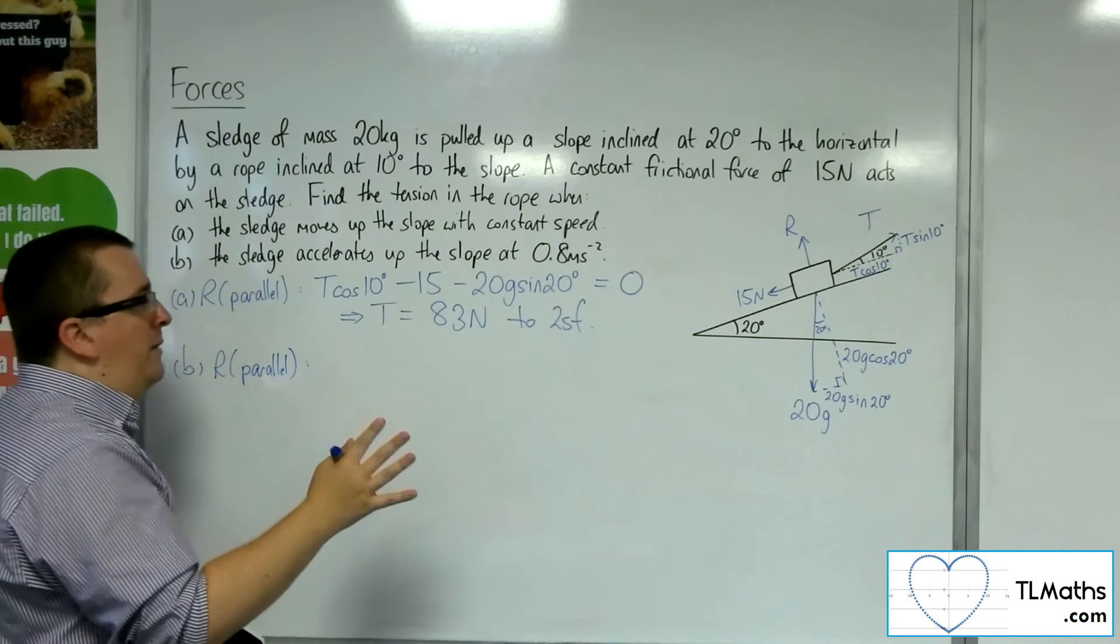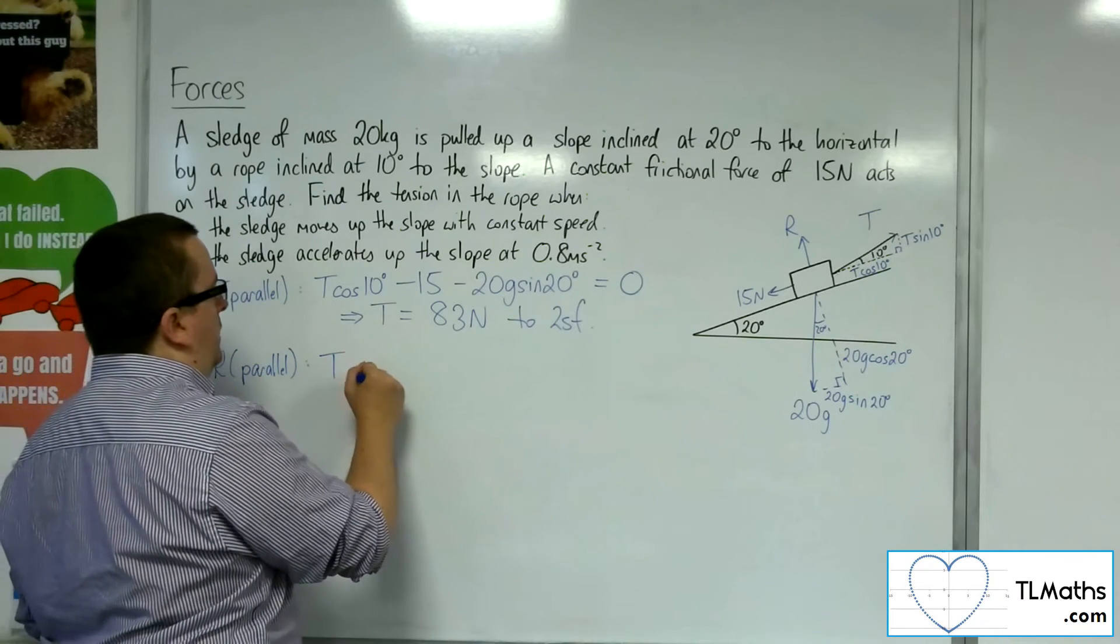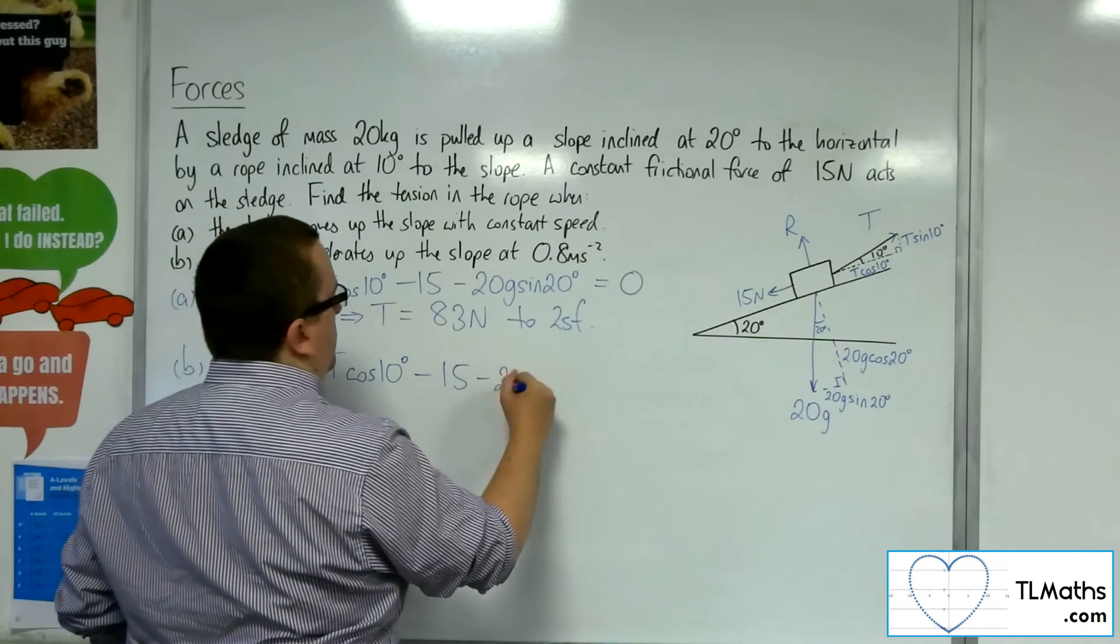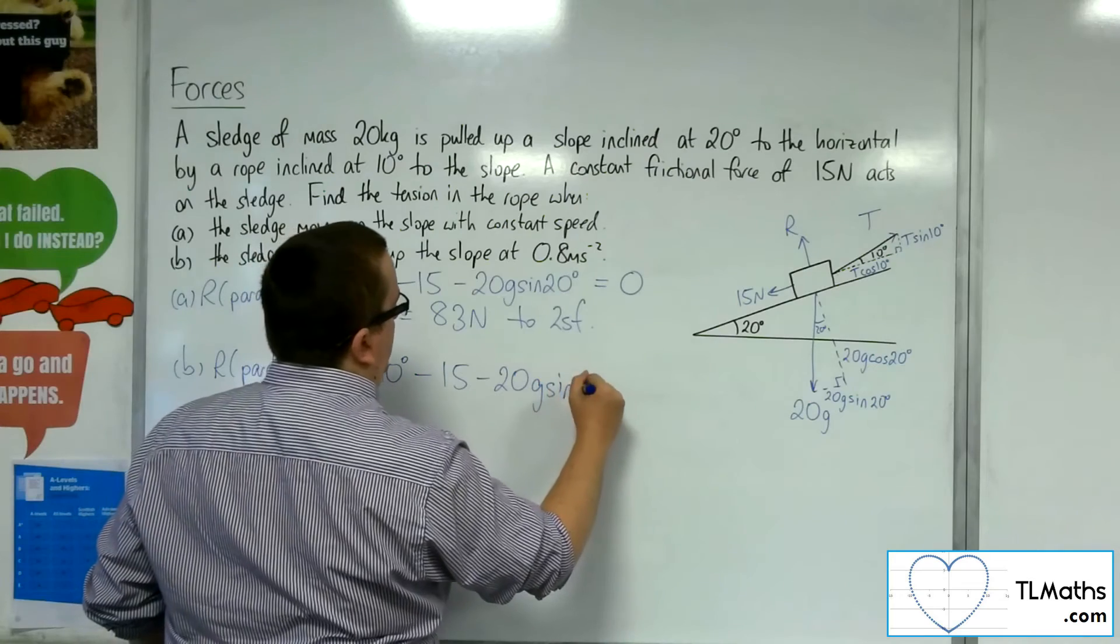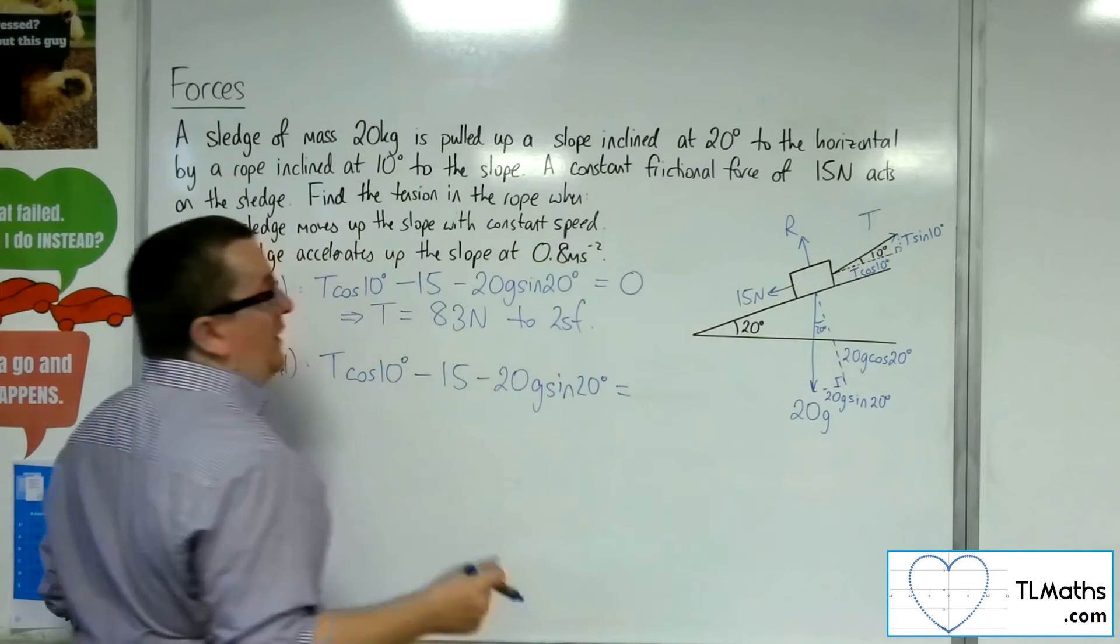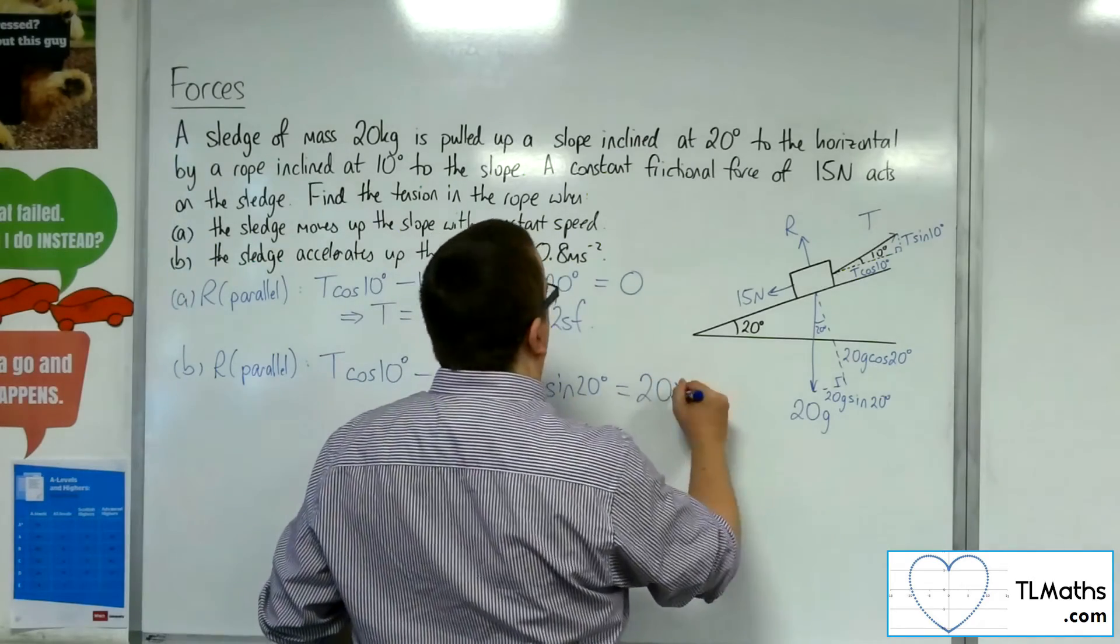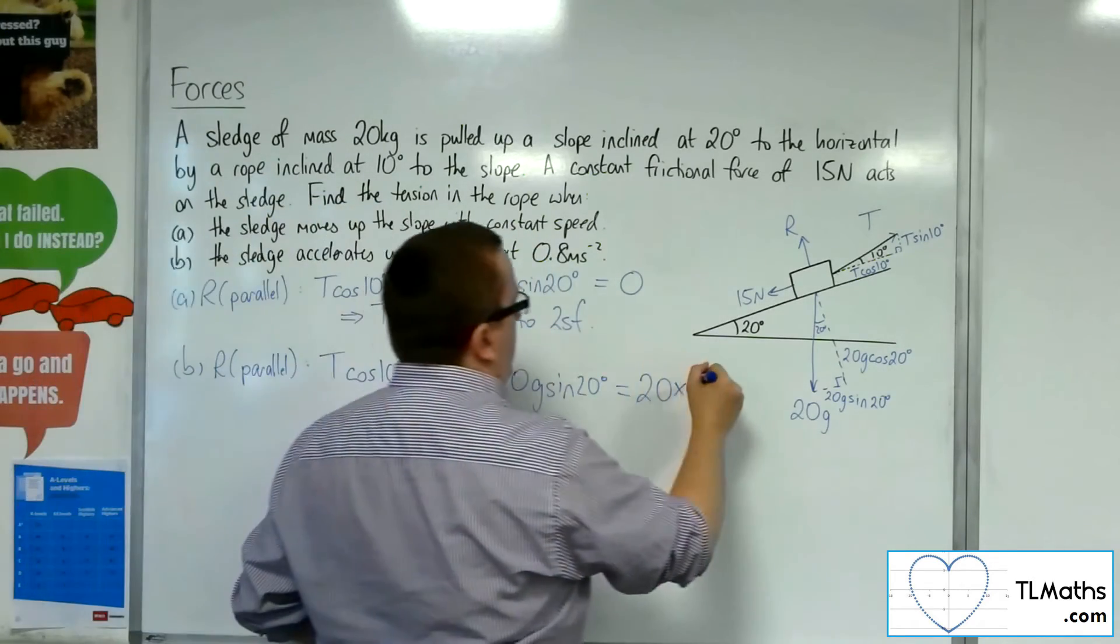But I've got exactly the same forces working. So I've got the t cos 10, take away the 15, take away the 20g sine 20. The only difference is that now that's equal to the mass, 20, times by the acceleration, which is 0.8.